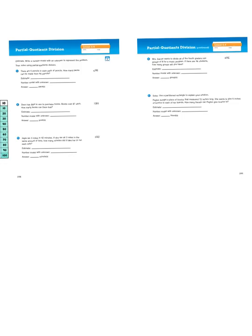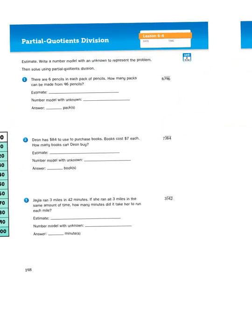We're in our math journals on pages 198 and 199, Unit 6, Lesson 4. So let's take a look at the instructions on the top of page 198. It says, Estimate, write a number model with an unknown to represent the problem, then solve using Partial Quotients Division.